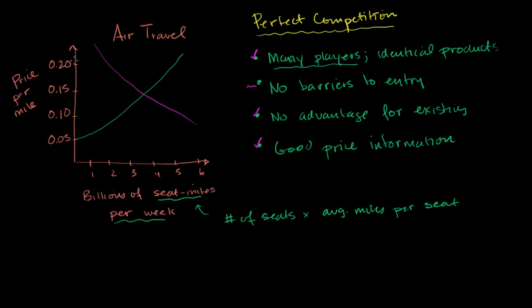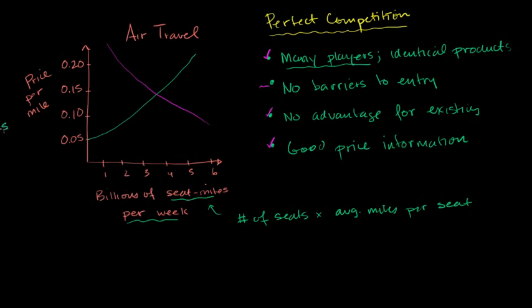And that gives you how much air travel. This is a measure of air travel in, let's say, in the U.S. in that week. And on this axis, this is the price. This is price per, and this should actually say price per seat-mile. Price per seat-mile.